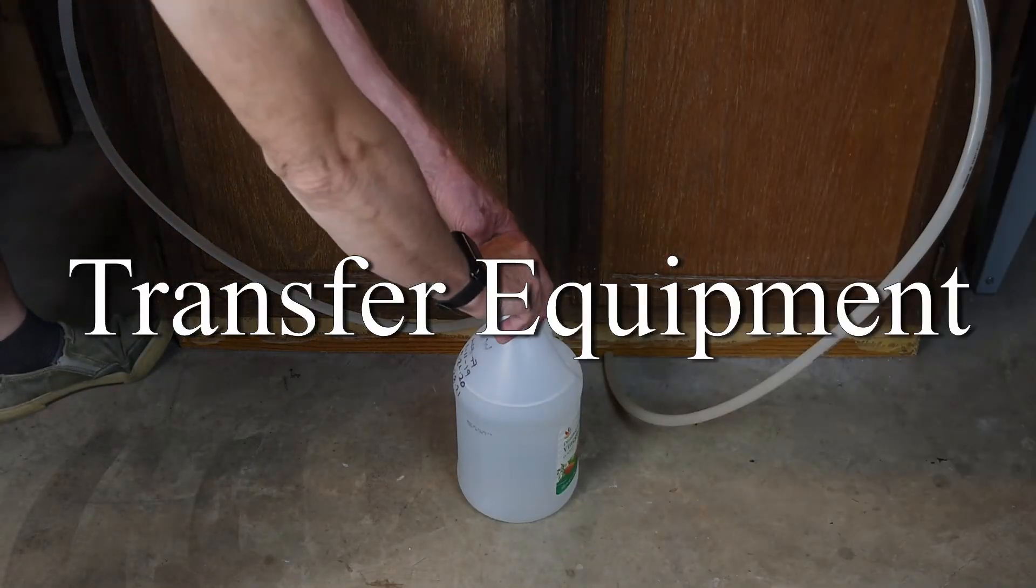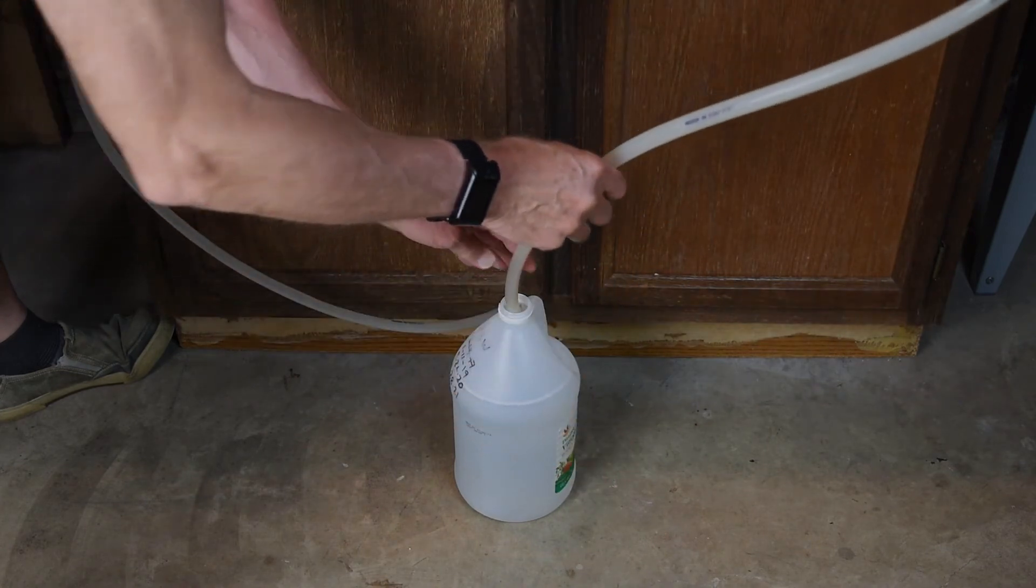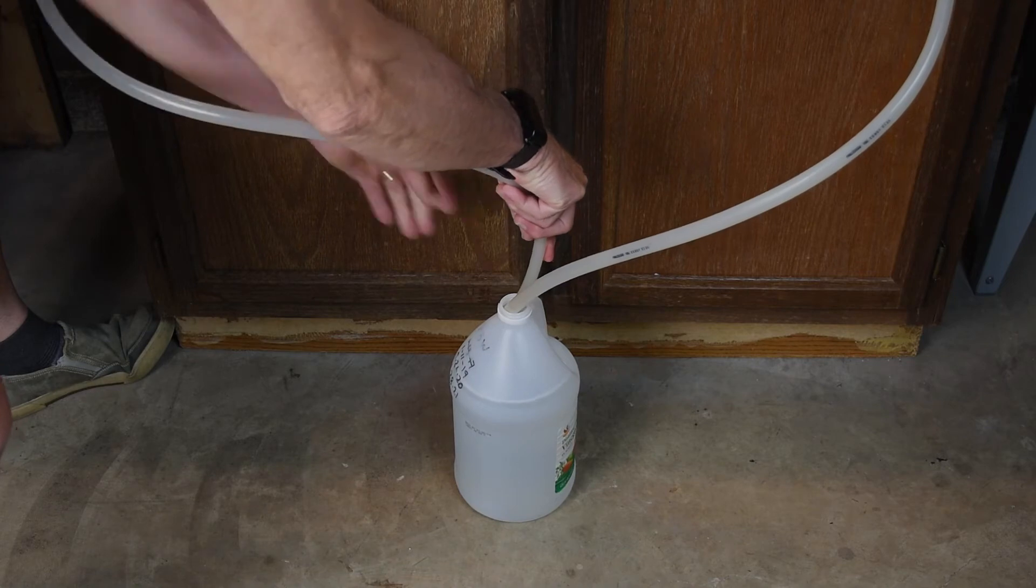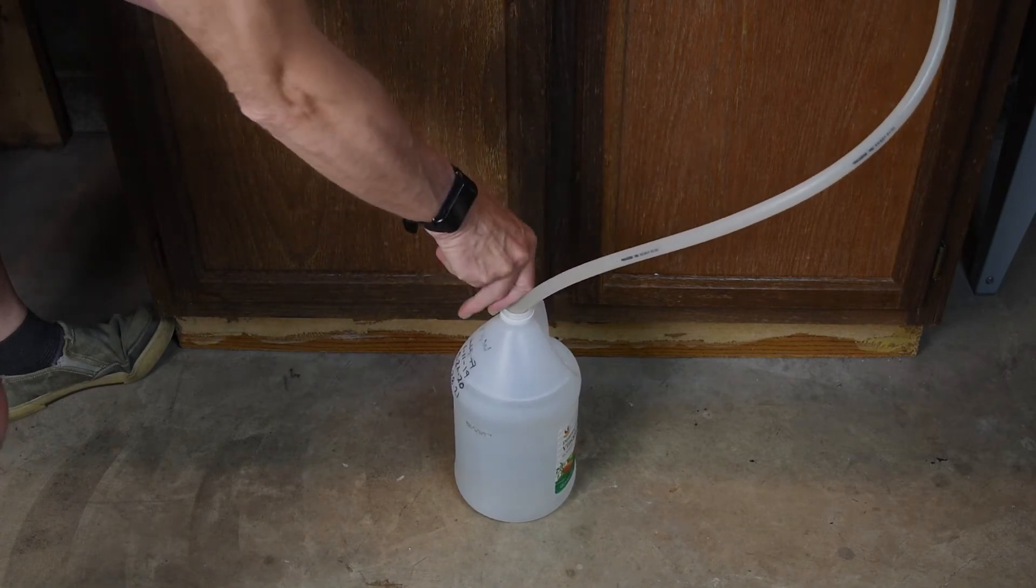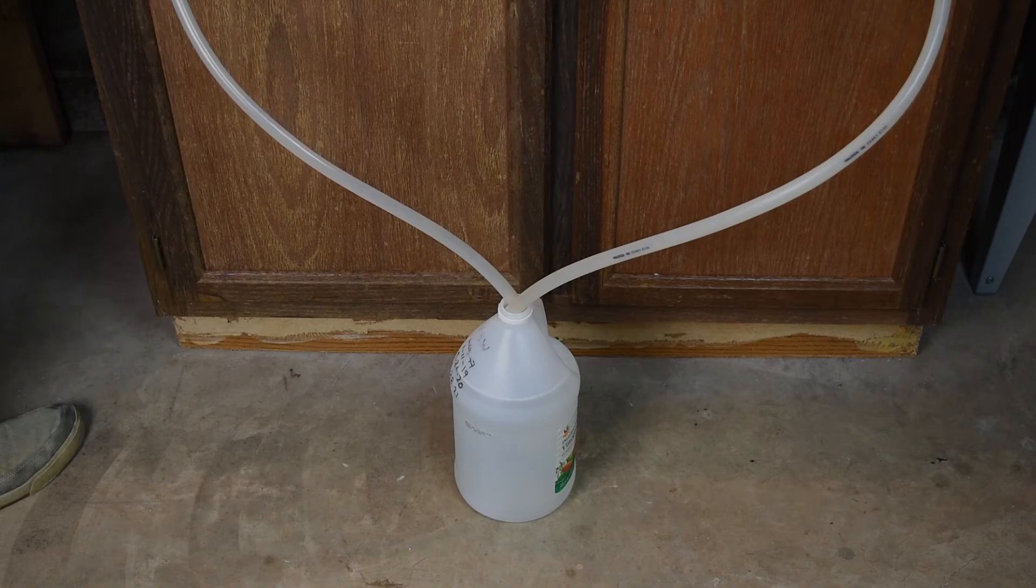You need to rinse, clean, and sanitize every part of your transfer or racking equipment. To easily clean or sanitize pumps and tubing, place both the inlet and outlet tubing into the solution and then run the pump for 10 minutes.